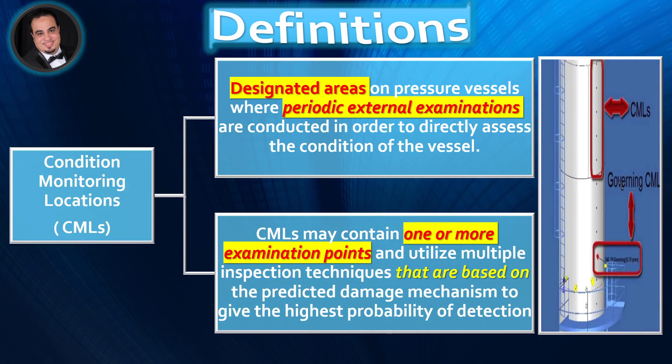Condition Monitoring Locations (CMLs) are designated areas on pressure vessels where periodic external examinations are conducted in order to directly assess the condition of the vessel. CMLs may contain one or more examination points and utilize multiple inspection techniques that are based on the predicted damage mechanism to give the highest probability of detection.